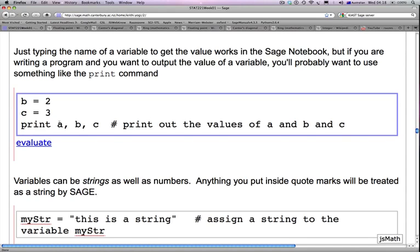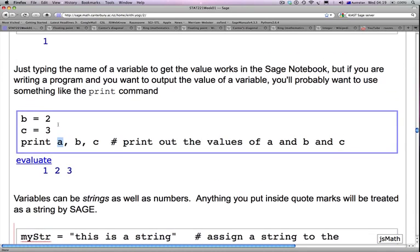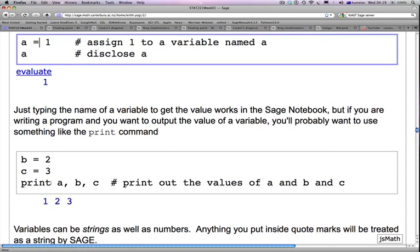Just typing the name of a variable to get the value works in the SAGE notebook. But, if you are writing a program and you want to output the value of a variable, you will probably want to use something like the print command. So, now we are assigning 2 to B in the first line and 3 to C, and finally in the third line, we are printing A, B, and C. Note that we are separating the A, B, and C by a comma. If I shift enter, we simply get the output 1, 2, 3. Remember that A is still in machine memory because we declared A upstairs in the previous cell. So, the computer remembers that A is actually assigned the value 1.